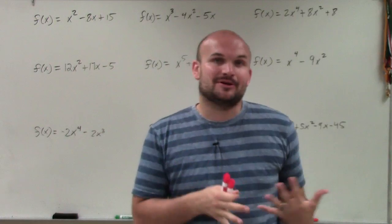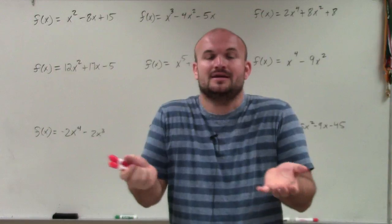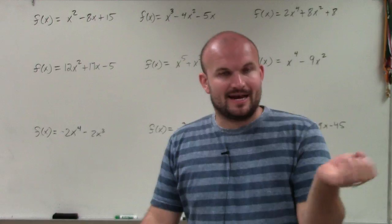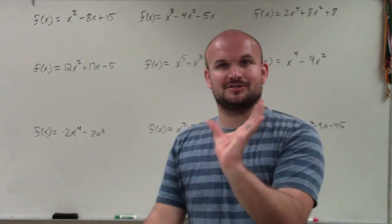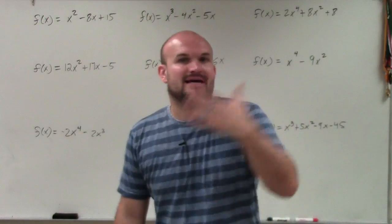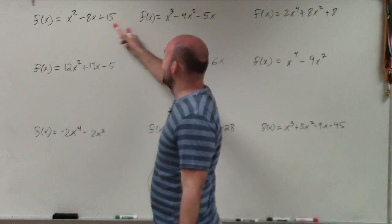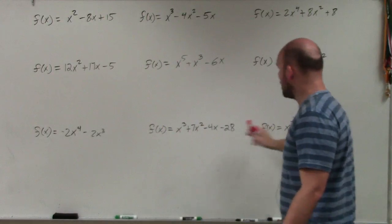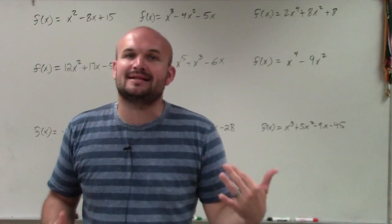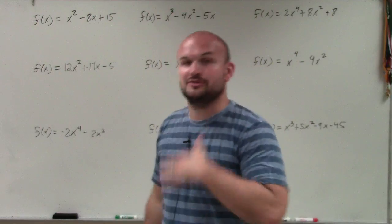In the last video, I found the zeros of a polynomial when it was given in factored form. We set our polynomial function equal to zero, and it was already factored — you had your linear factors multiplied by each other, so we just applied the zero product property and solved. In this case, none of these are written as a product of its factors, so our main goal is going to be to rewrite them as a product of its factors. To do that, we actually are going to have to factor.